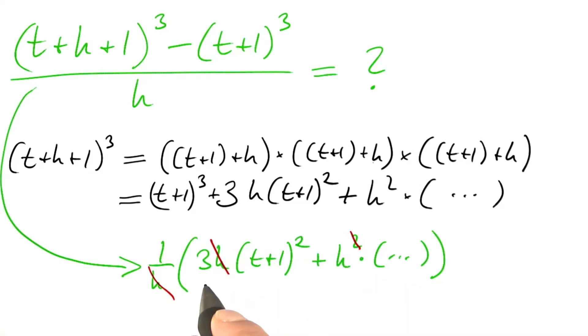And in the end, we are left with 3 times the square of t plus 1. And this term is negligible.